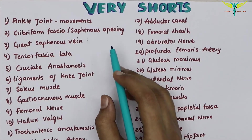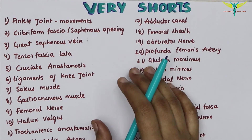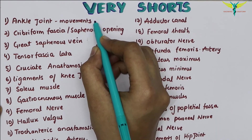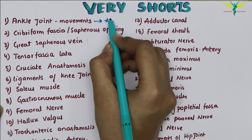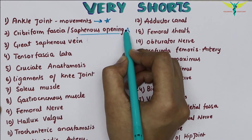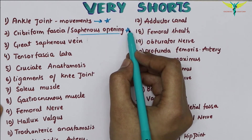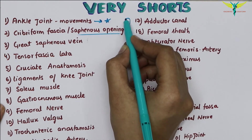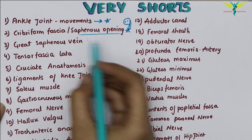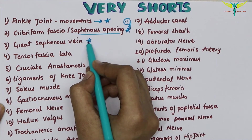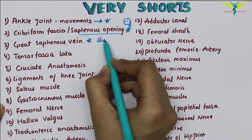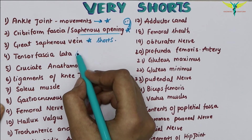Now for the very short questions (VSAQs). The ankle joint and its movements are important. The cribriform fascia or saphenous opening is a very important question — draw a simple diagram. The great saphenous vein is very important and may also be asked as a short question.